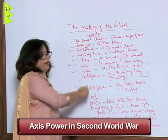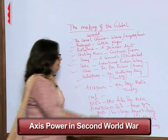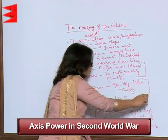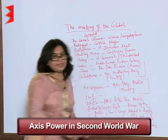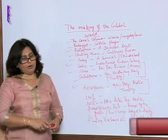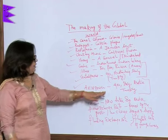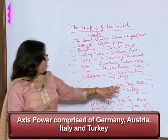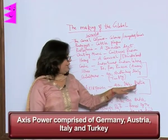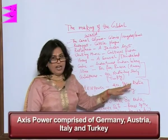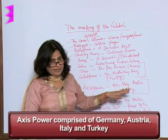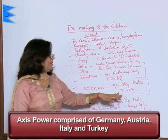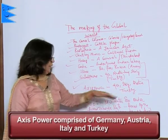Next is 'Axis Power.' Axis Power refers to the second World War. The Axis Powers comprised Germany, Austria, and Italy, later joined by Turkey.